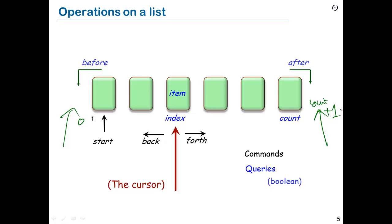Here's a little quiz: this property that the index can be between zero and count plus one is an important property of list classes such as line. We need to write it in the software. As we're going to see, this is the kind of property that we will find in the invariant of list classes — for example, in the invariant of class line.